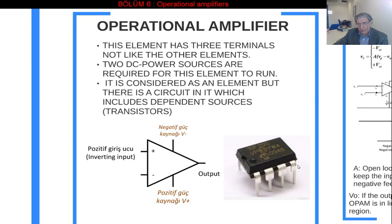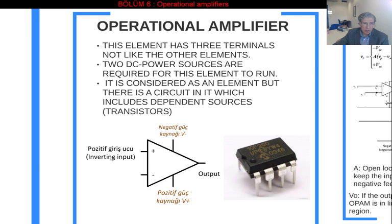It is this element. This element has three terminals — this is the schematic representation of this operational amplifier in circuits. It has three terminals: two of them are input terminals. One is the non-inverting input, and the other is the inverting input. These are the inputs, and the third terminal is the output. Therefore, it is a three-terminal element.